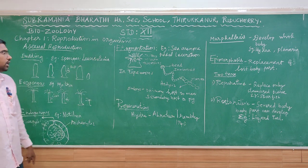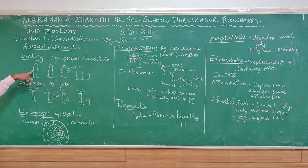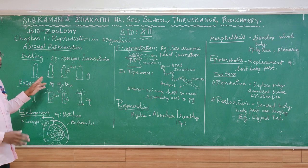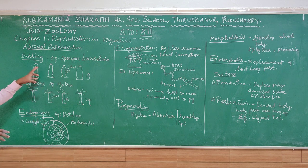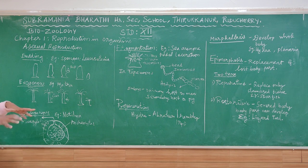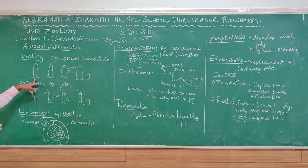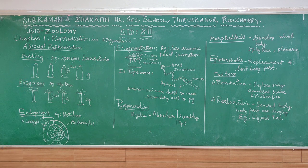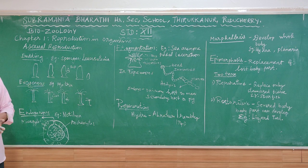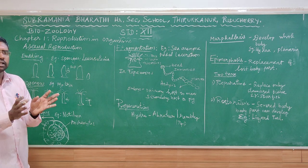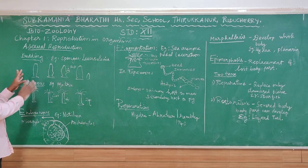For sponges, the example is Leucosolenia. It is a metazoan, multicellular organism. The sponge body is attached to a substrate. There are many holes — pores — in the body. The cells have a loose arrangement, making it a simple structure.